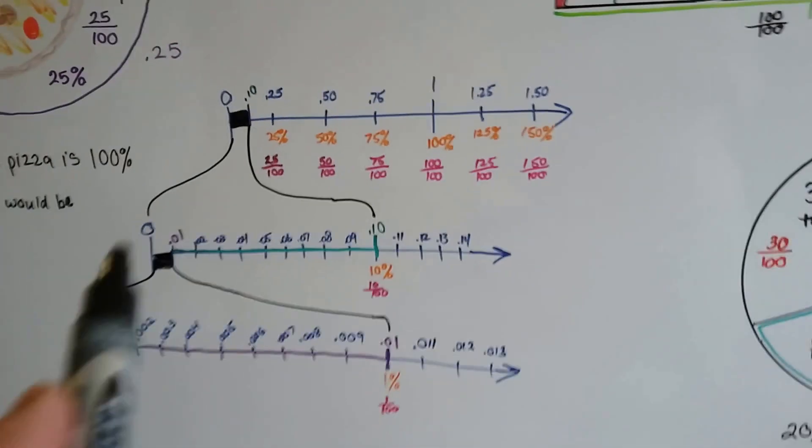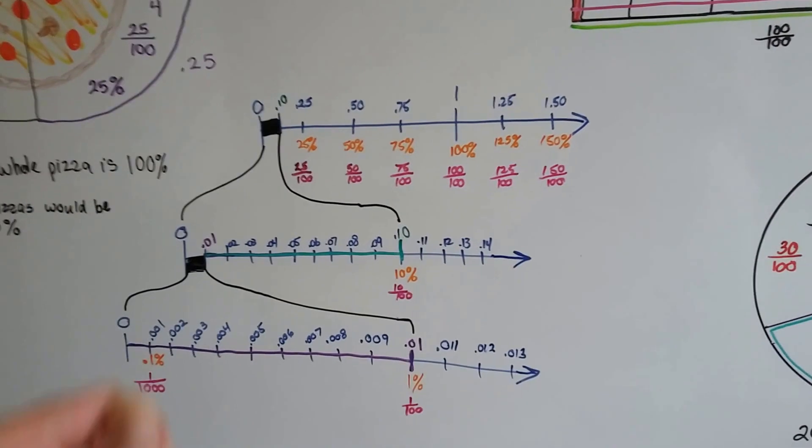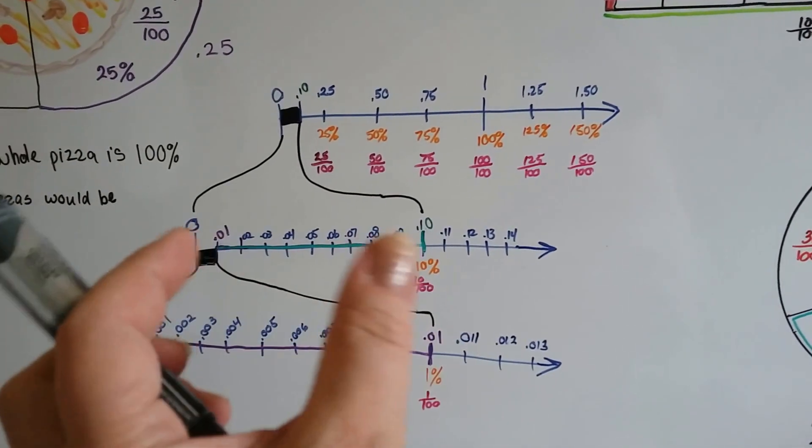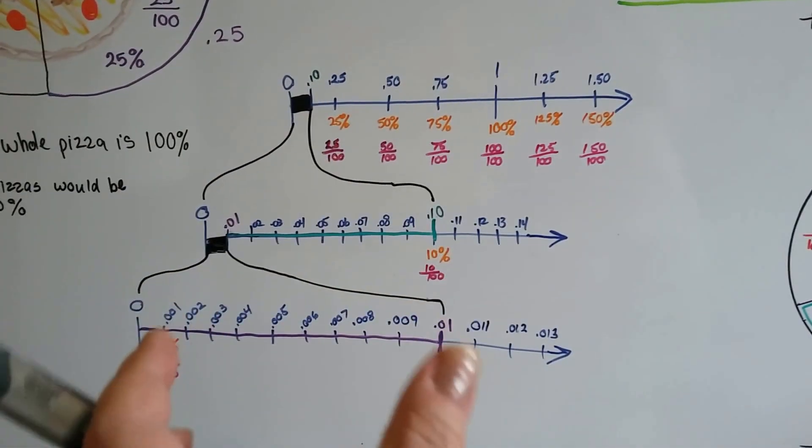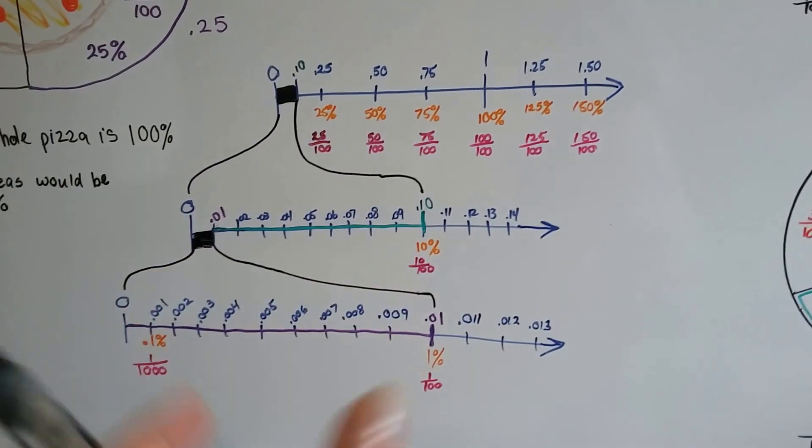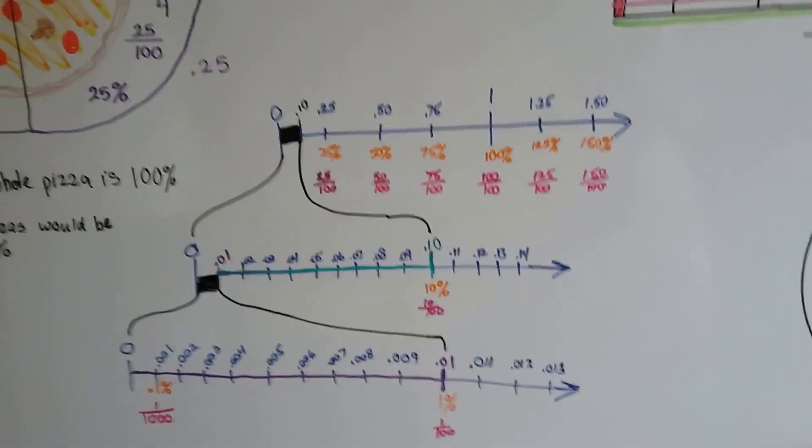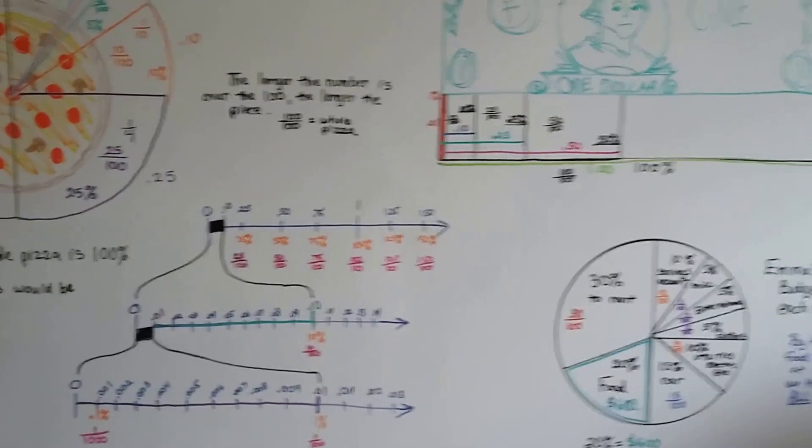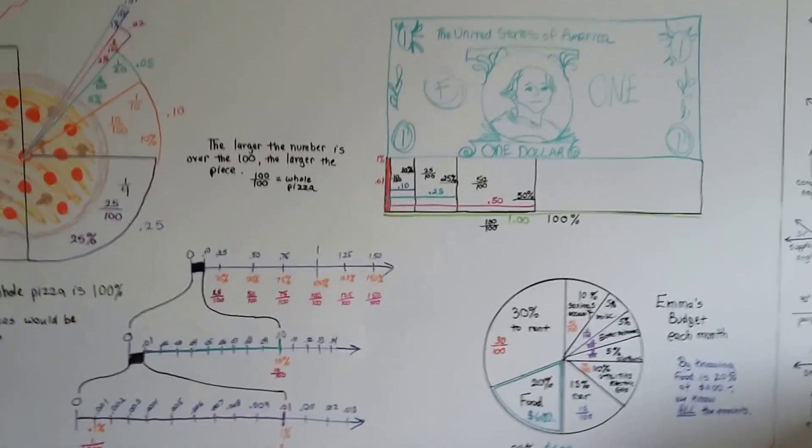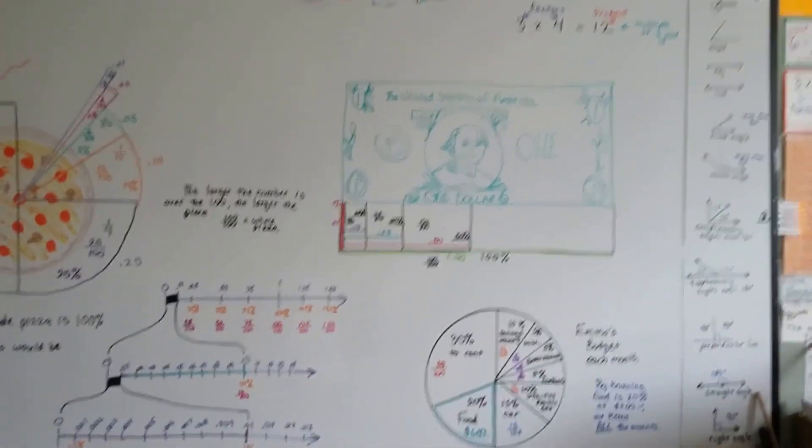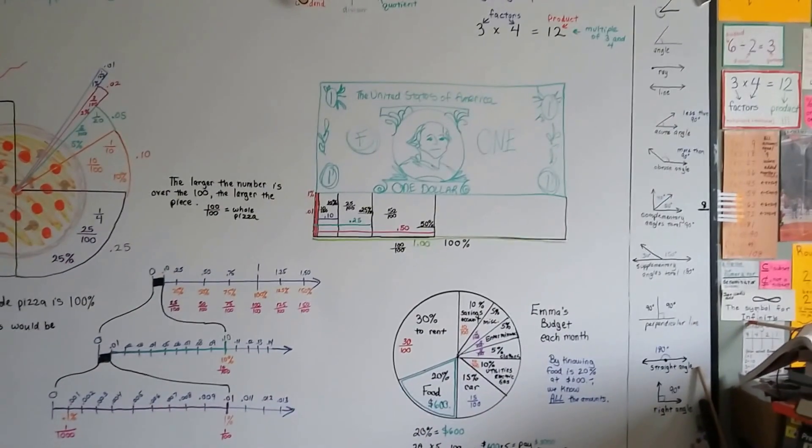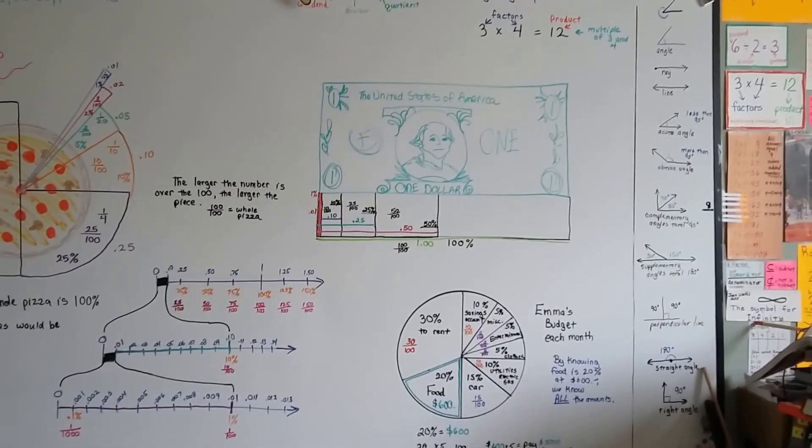So we're going to be doing ordering fractions and decimals next. So I wanted you to see what it looks like when we started looking inside these tiny little spaces in-between each one of these. I hope this gives you a better idea of the breakdown of fractions, decimals, and percents, and I'll see you next video. We'll put these in order, okay? Bye.